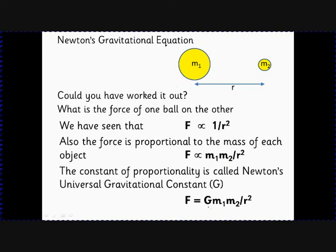Later on, somebody else managed to work out what this constant was to make it into an equal sign, which is the equation we use now. So this equation here tells us the force between two objects of mass M1 and M2 and a separation of R squared.